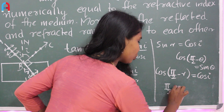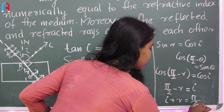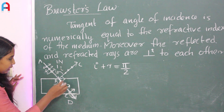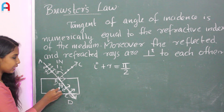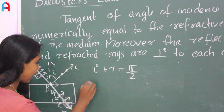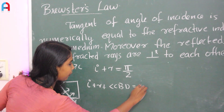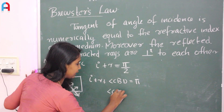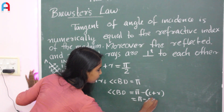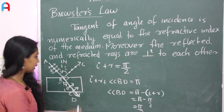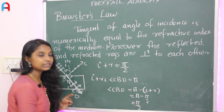We get pi/2 minus r equals i. Rearranging, we get i plus r equals pi/2. In our figure, i is the angle of incidence and r is the angle of refraction. Since i plus r plus angle CBD equals 180 degrees (linear pair), angle CBD equals pi minus (i plus r), which equals pi minus pi/2, which is pi/2. Therefore, the angle between the reflected ray and refracted ray is 90 degrees — they are perpendicular.